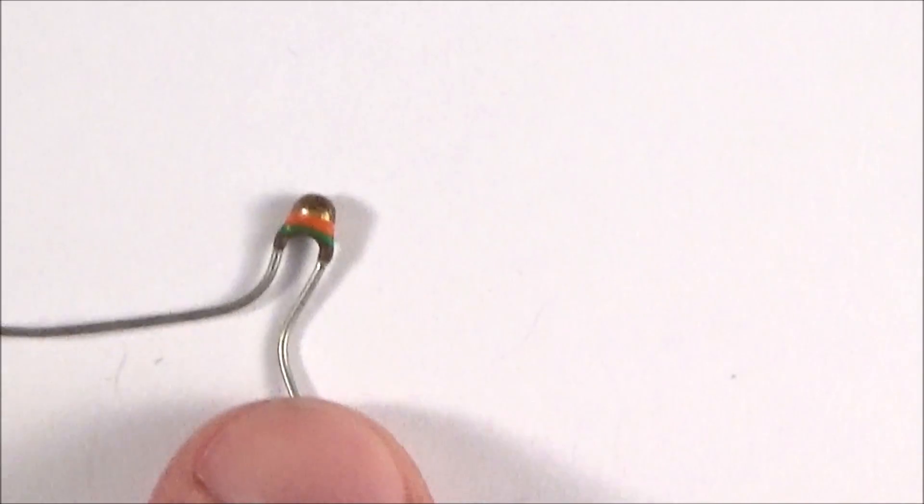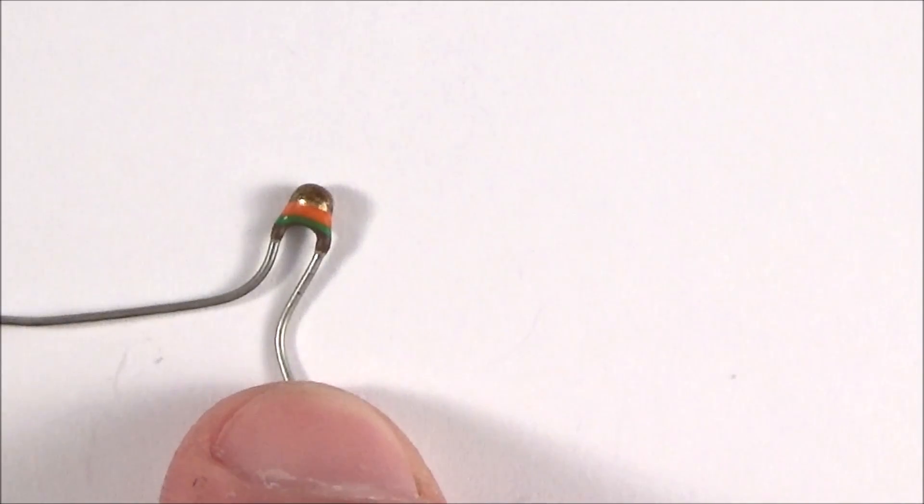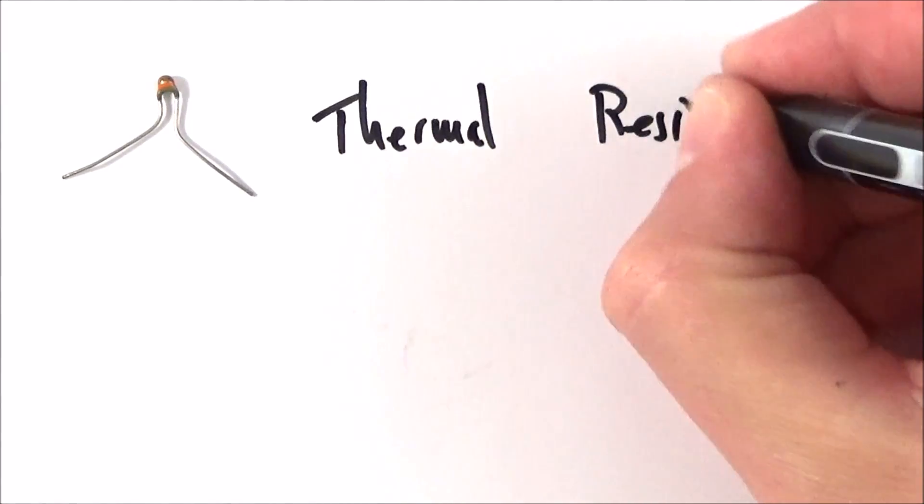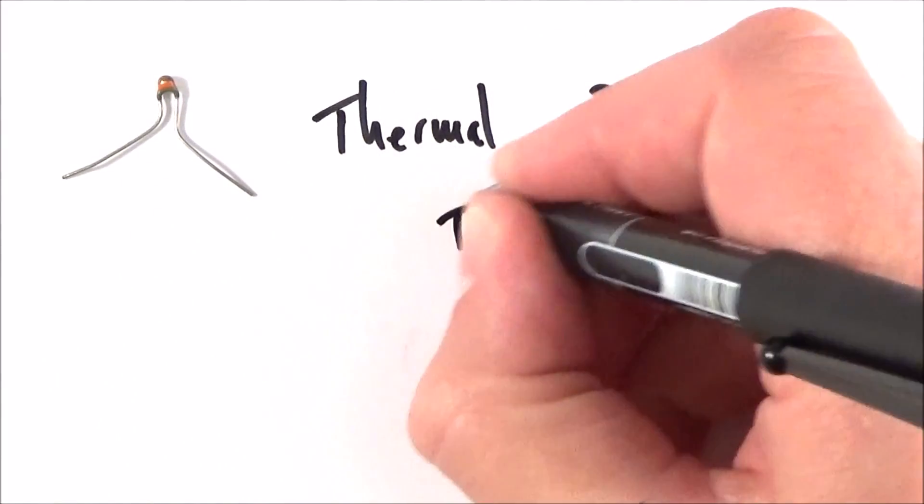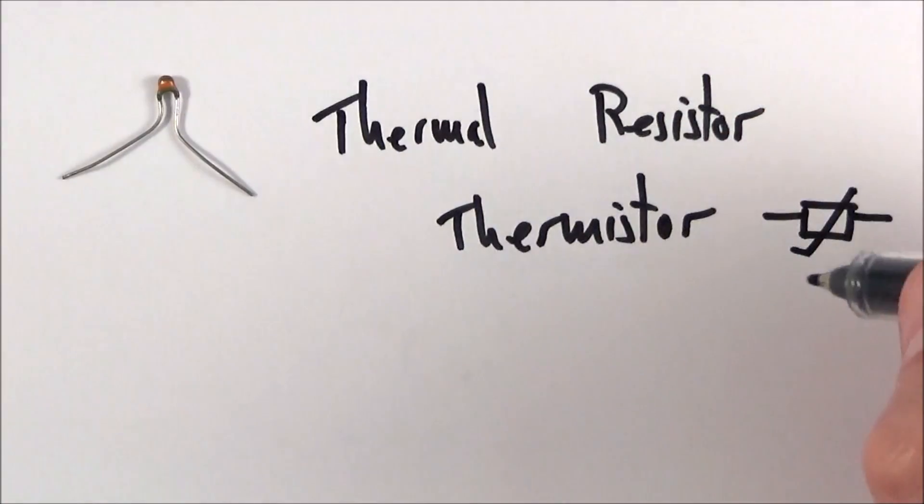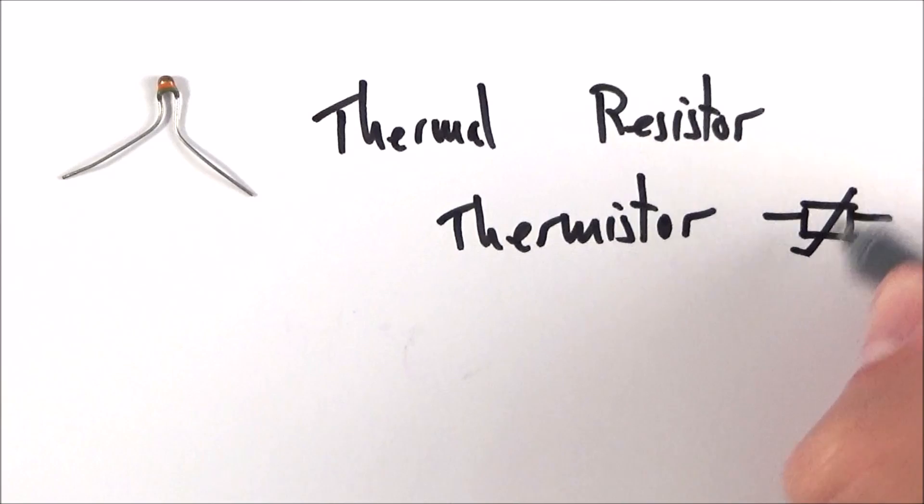This one acts as a heat sensor and will only set the alarm off. So what we have here is a kind of thermal resistor—that's a bit of a mouthful—so we tend to call it a thermistor. The symbol for this is just a normal resistor with a line that goes through it.